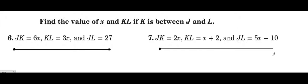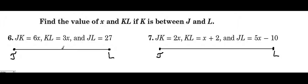Each segment will have endpoints. So for the first example: j, k — k is between j and l. So j and l are the endpoints, and k will be somewhere between them. The exact position of k is arbitrary; it doesn't really matter. What matters is what each length is given as.